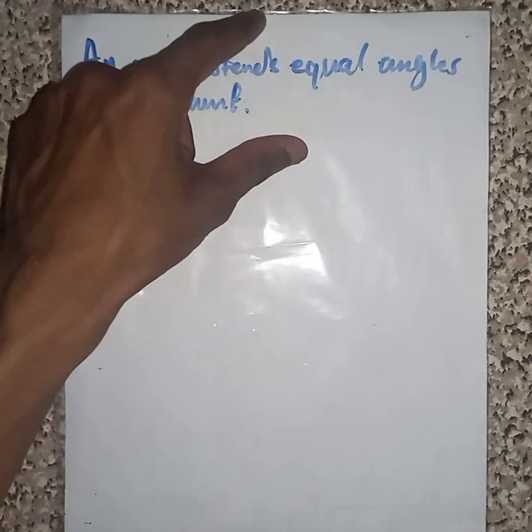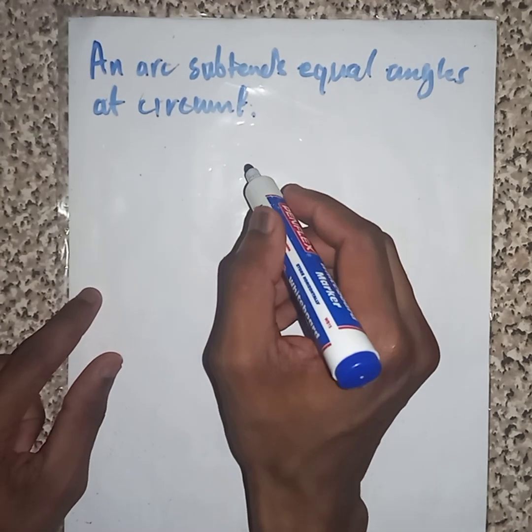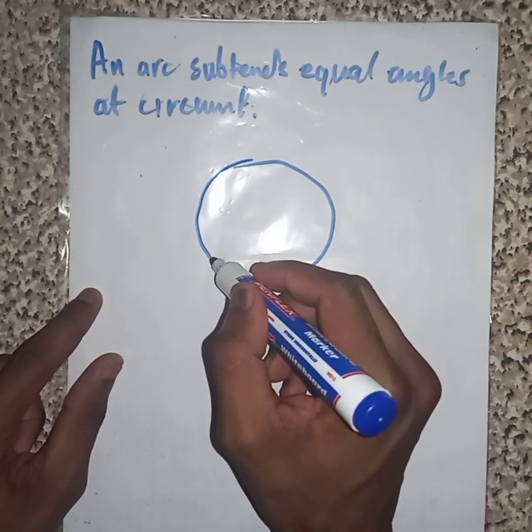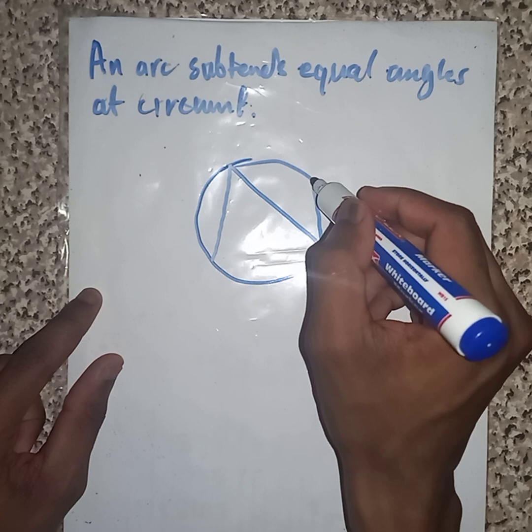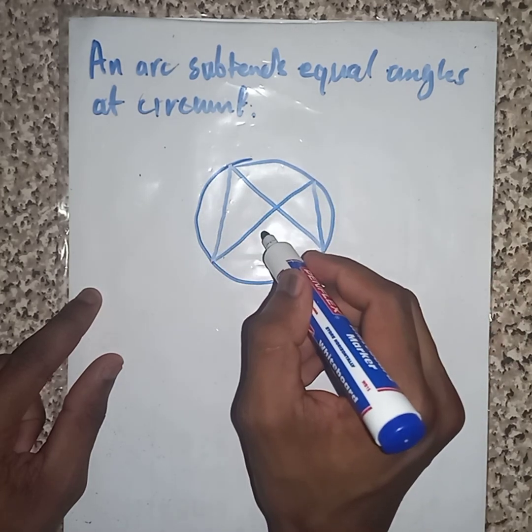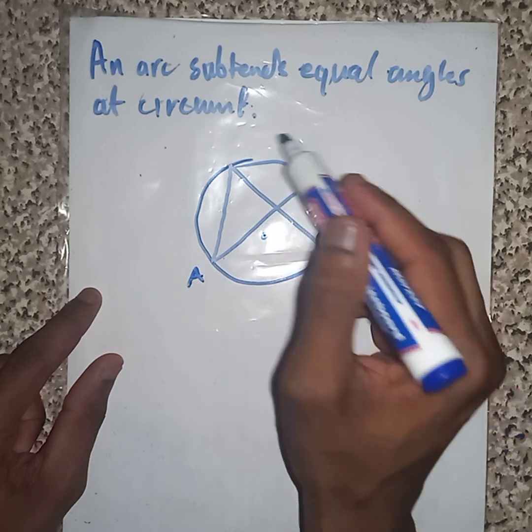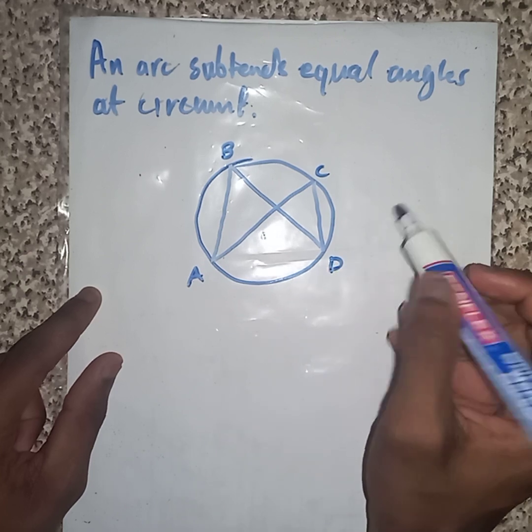Let's see if I have a diagram like this. So I have a diagram like this. Let's say with the center somewhere here. We have points B, C, D.